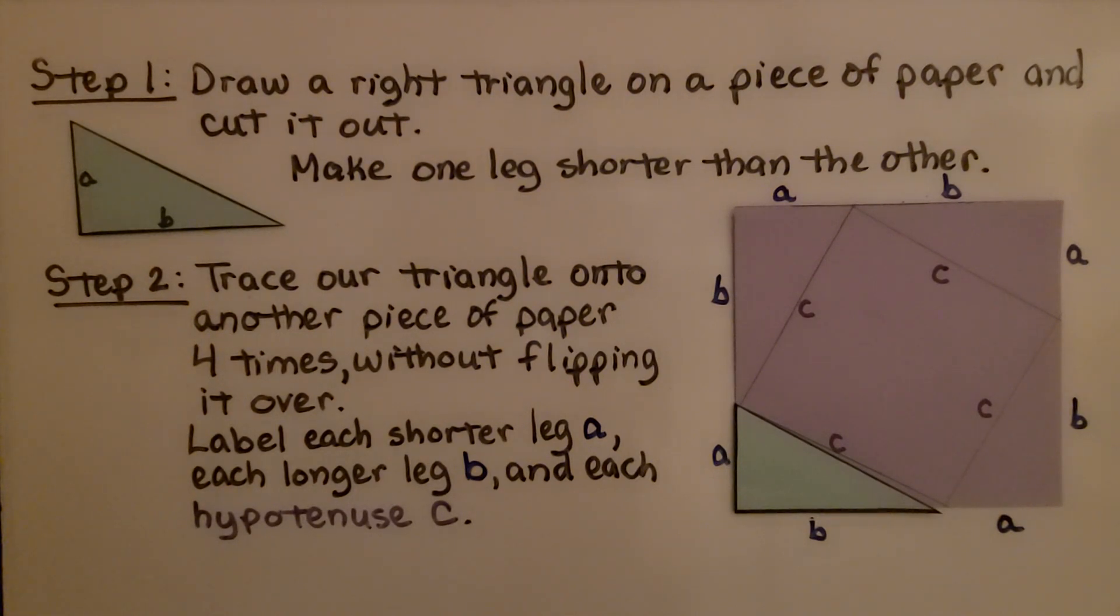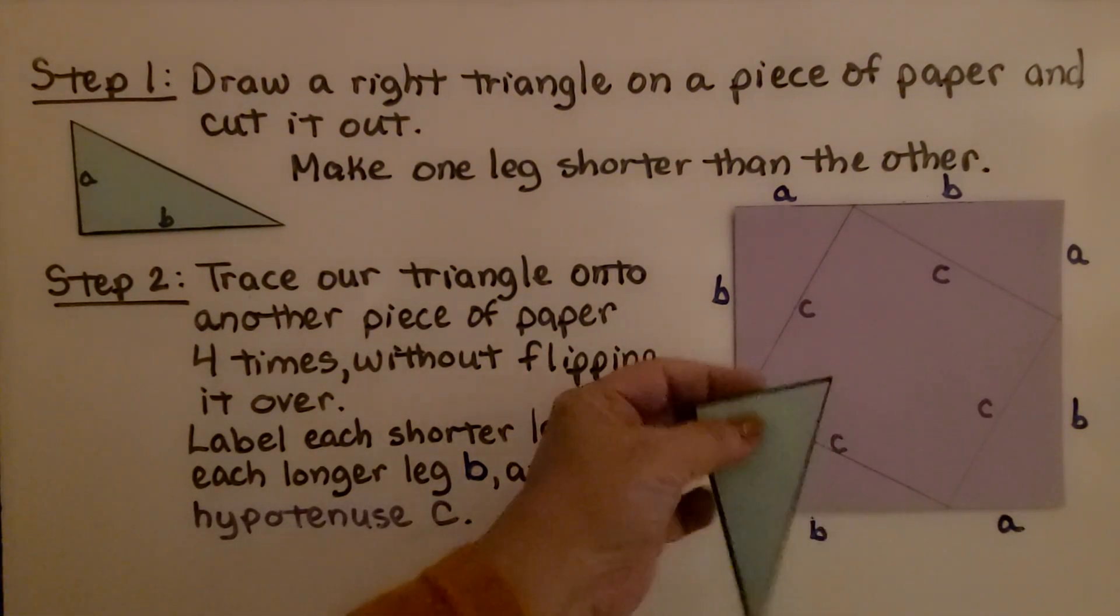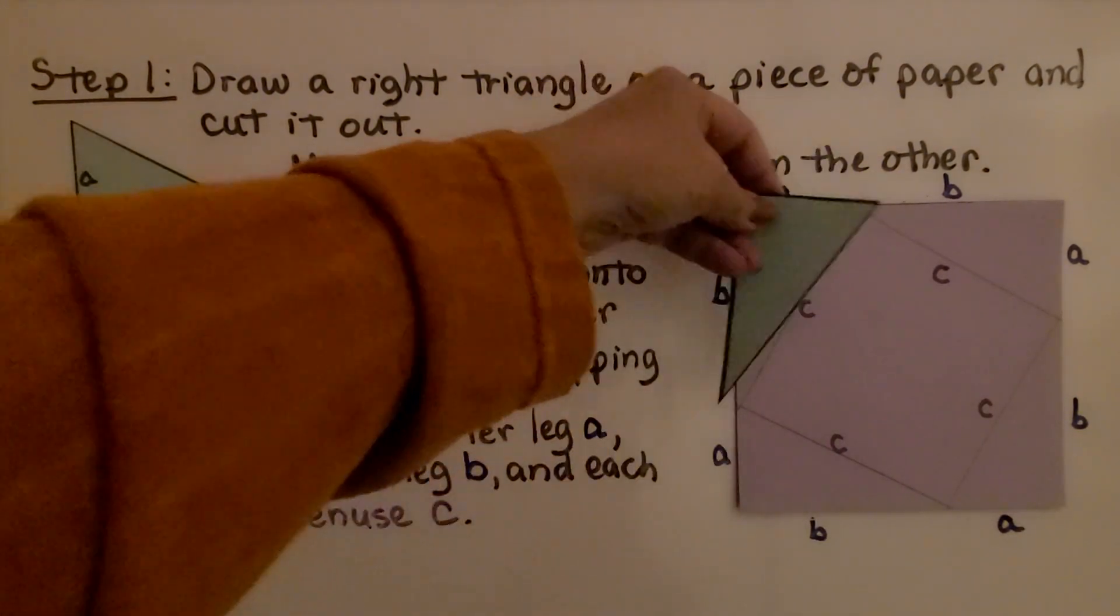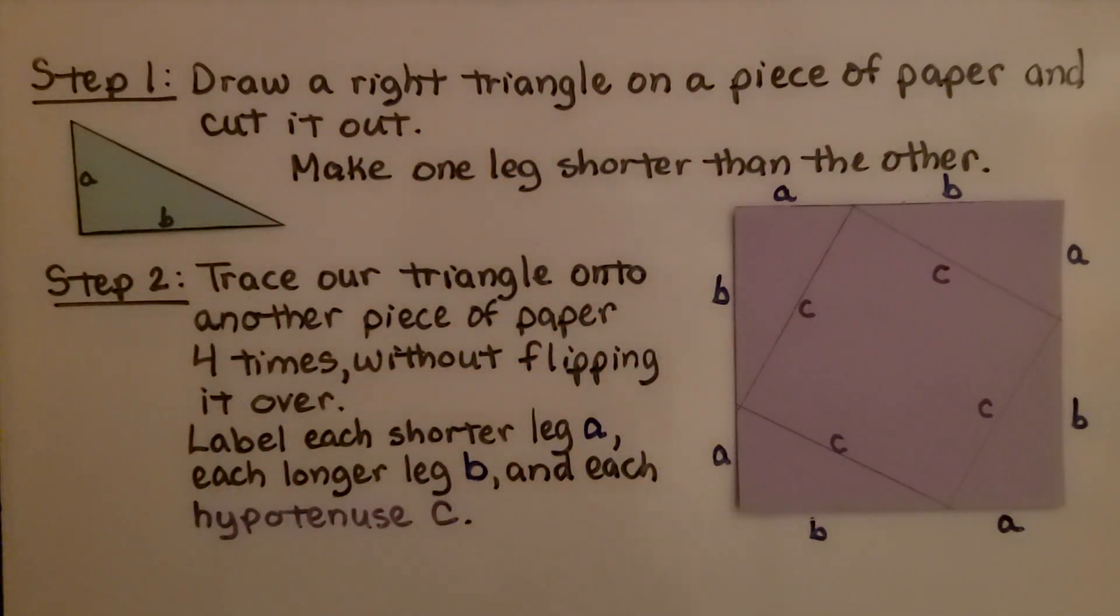We trace our triangle onto another piece of paper four times without flipping it over. We label each shorter leg a, each longer leg b, and each hypotenuse c. Notice all the hypotenuse c are on the inside facing into the square. So it's each side of this square. We've got our short side a, our long side b. Short side a, long side b going all the way around.